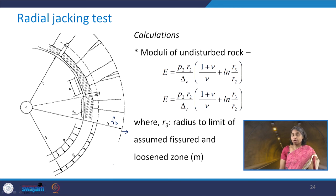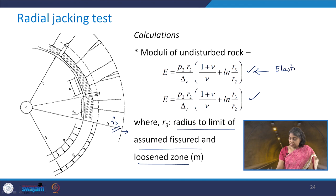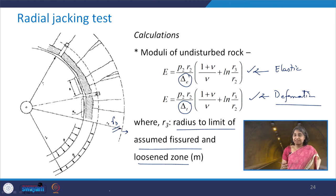If we consider r3 as the radius to the limit of the assumed fissured and loosened zone, we can use the corresponding expressions to obtain the moduli of the undisturbed rock — the first expression for elastic modulus and the second for modulus of deformation. Using δt versus δe differentiates the elastic modulus from the deformation modulus.